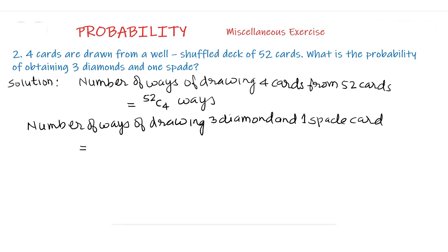Three cards of diamond can be selected from 13 cards in 13C3 ways multiplied by one spade card can be selected from 13 spade cards in 13C1 ways.